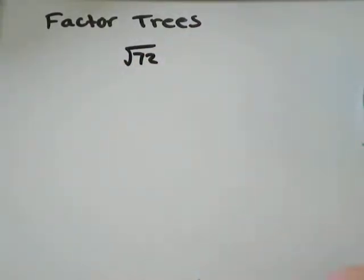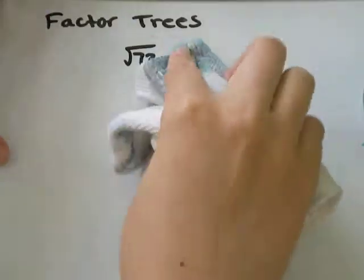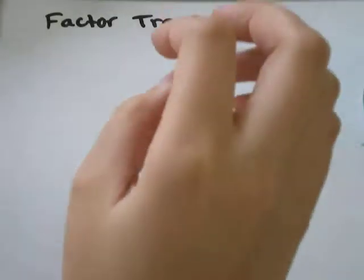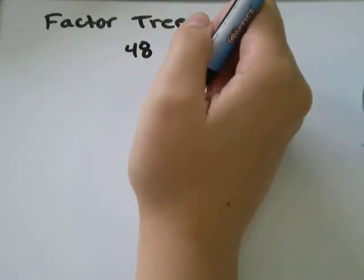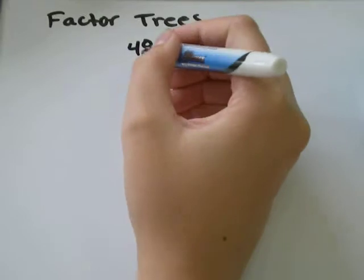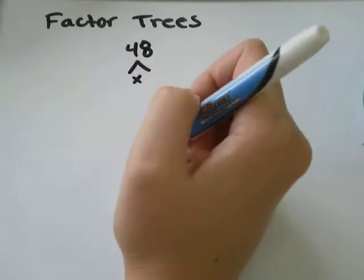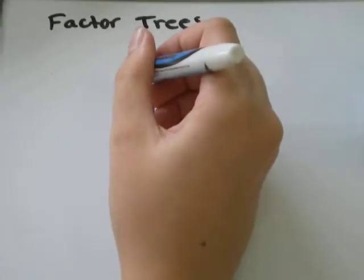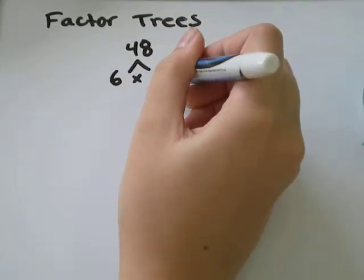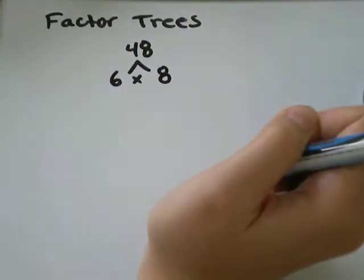So why don't we make a factor tree for the number 48, because 48 has a ton of factors. So the first thing we'll think is, what two numbers do we multiply together to get 48? The ones that I can think would be 6 and 8. So that's the first branch of our tree.